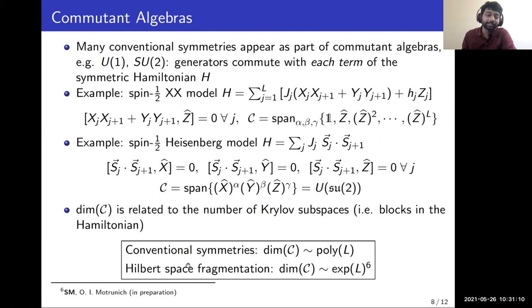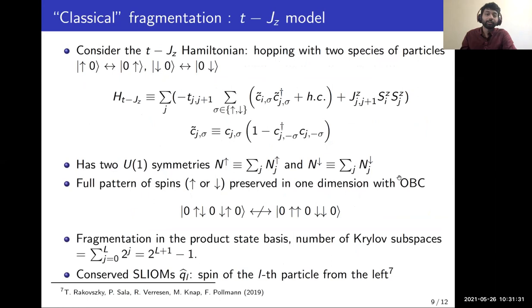To give a concrete definition of Hilbert space fragmentation: for conventional symmetries, the dimension of the commutant algebra scales polynomially with increasing system size, whereas in fragmented models, this dimension grows exponentially with system size.